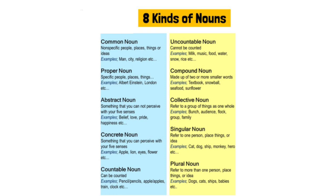Third, we have abstract noun. An abstract noun is something you cannot perceive with your five senses. It means you cannot see it, but you can feel it. Example: belief, love, pride, happiness, etc.